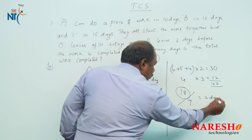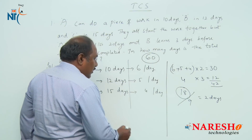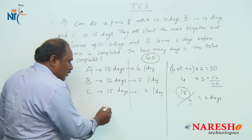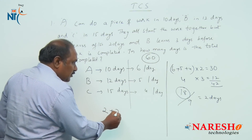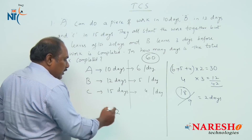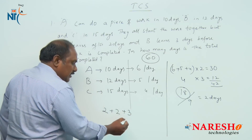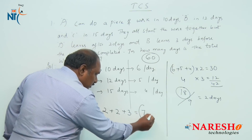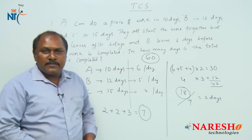So the total work is completed as follows: first 2 days all 3 are working, next 2 days B and C are working, and the last 3 days only C is working. Therefore, the total work is completed in 7 days.